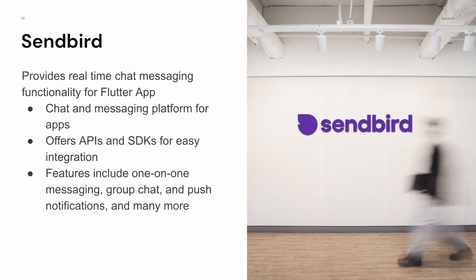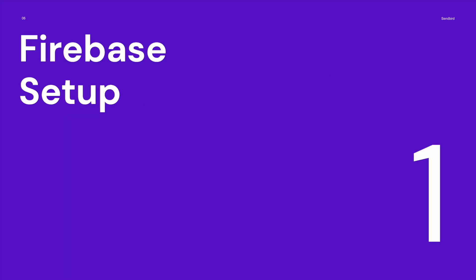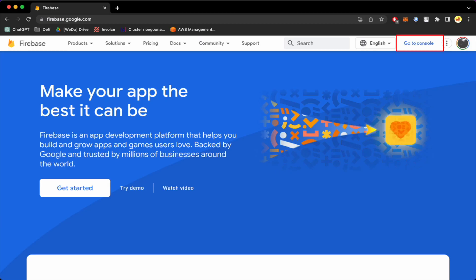Now knowing what Sendbird is and how we could use the chat SDK, let's jump into how we could set up push notifications in Sendbird SDK. But before we jump into code, we first need to set up Firebase. To do so, let's jump into firebase.google.com and after logging in, you should be able to see the screen shown right now. In the top right corner you'll see 'Go to Console' — let's click on that button.